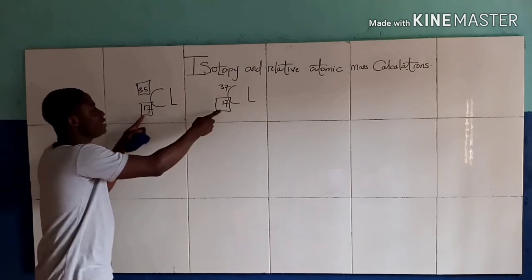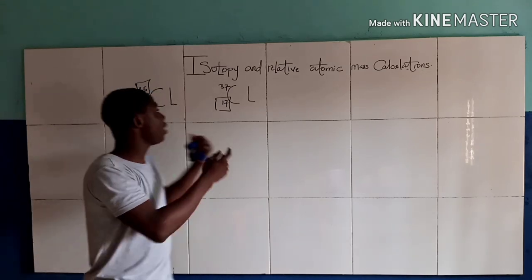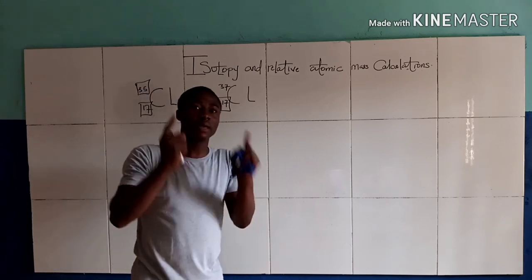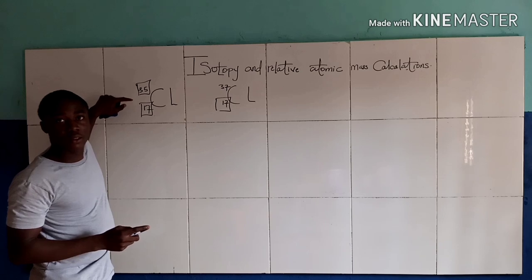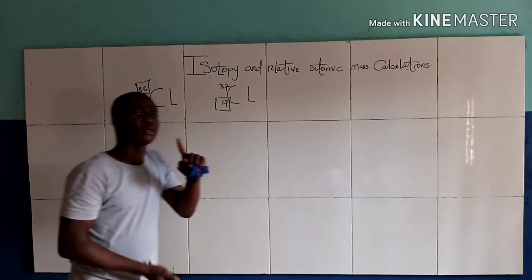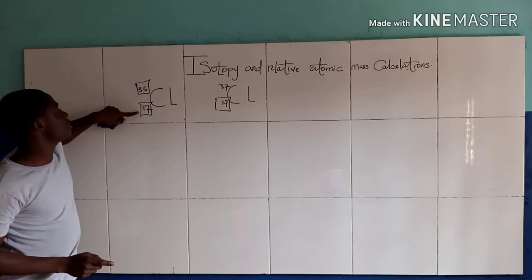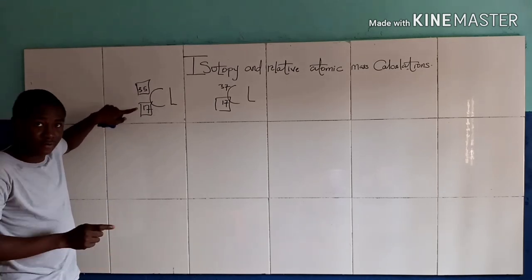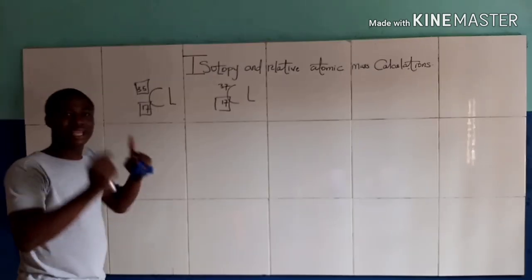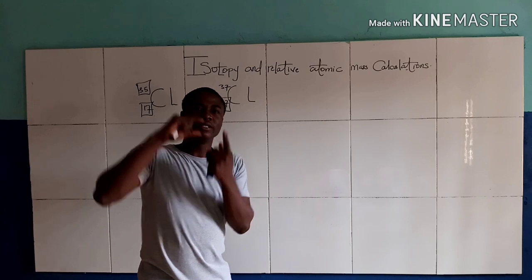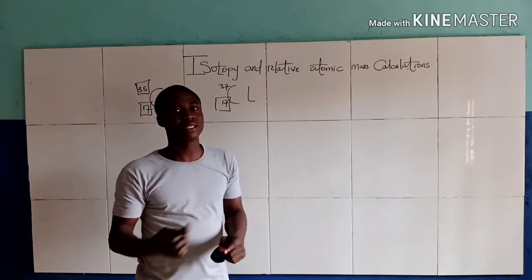Take note: since the atomic numbers are the same, it means that these two isotopes share the same chemical properties, because the atomic number is also called the proton number. And for a neutral atom, since the proton number is 17, the electron number becomes 17. The electron number defines the chemical properties of an element.